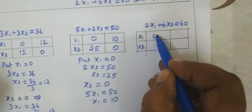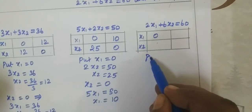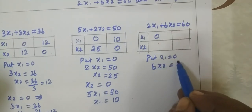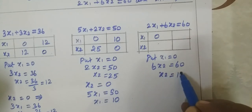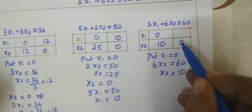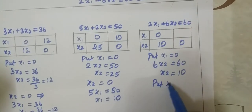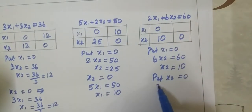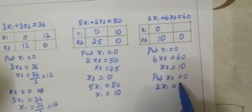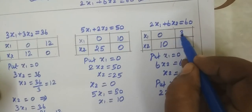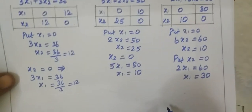Third equation: 2x1 plus x2 equal to 60. Put x2 equal to 0. Then 2x1 equal to 60, therefore x1 equal to 60 divided by 2, equal to 30. So x1 value is 30. Now we substitute these elements in the graph.